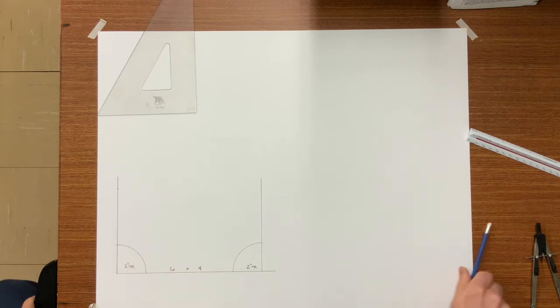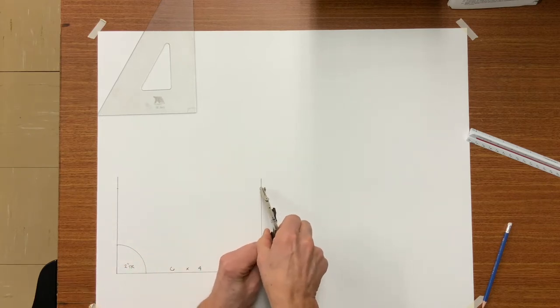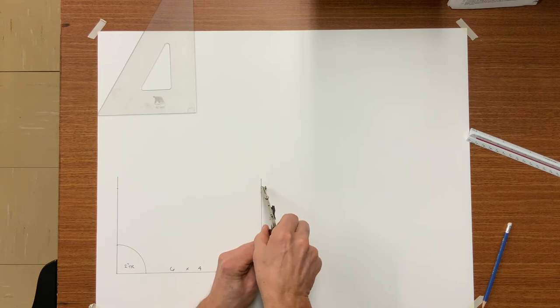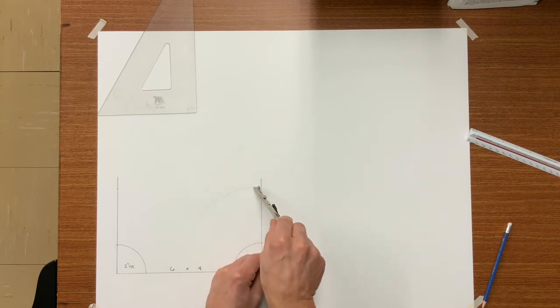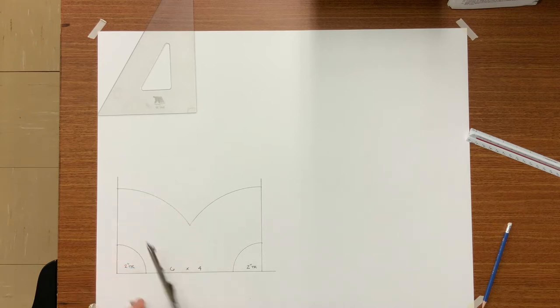Again, we've said we want a 2 inch throat radius. Now I'm setting my dividers to scribe the heel, and the dividers are now set to 6 inches. With your dividers set at 6 inches and using your throat radius as a center point, strike both arcs until they intersect.